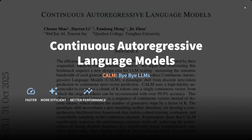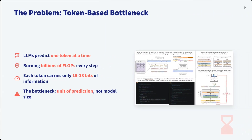CALM — bye bye LLMs — they are faster, more efficient, and better performing. So first let's understand the limitation with current LLMs. Current LLMs predict one token at a time. When generating a huge paragraph or book, this is painful, burning billions of FLOPs every step. Each token carries only 15 to 18 bits of information. The bottleneck is the unit of prediction, not model size.